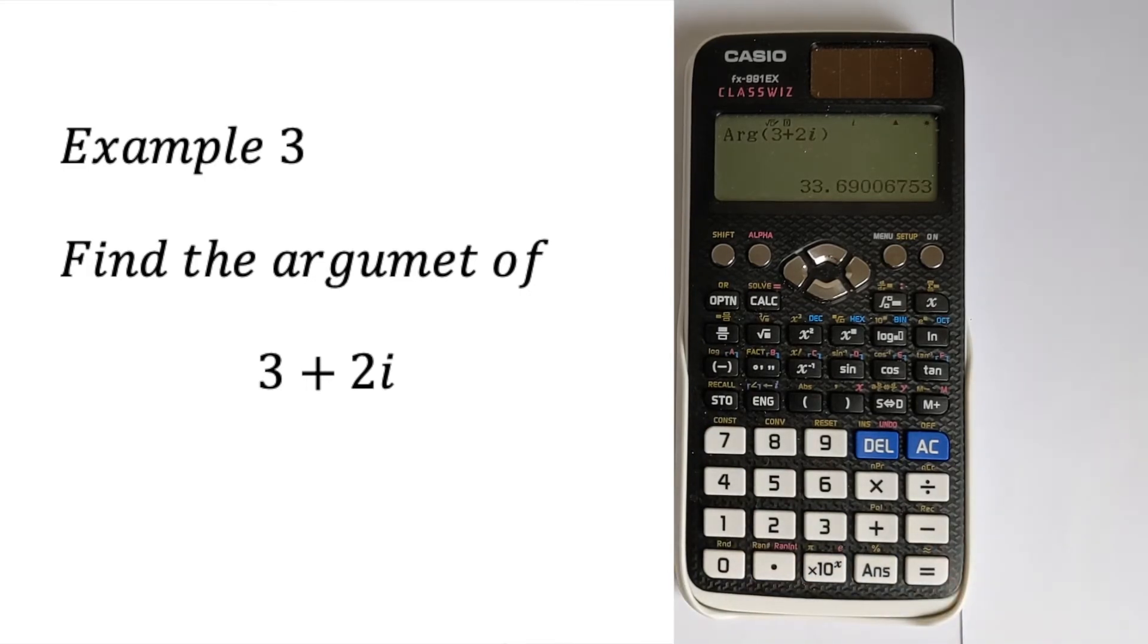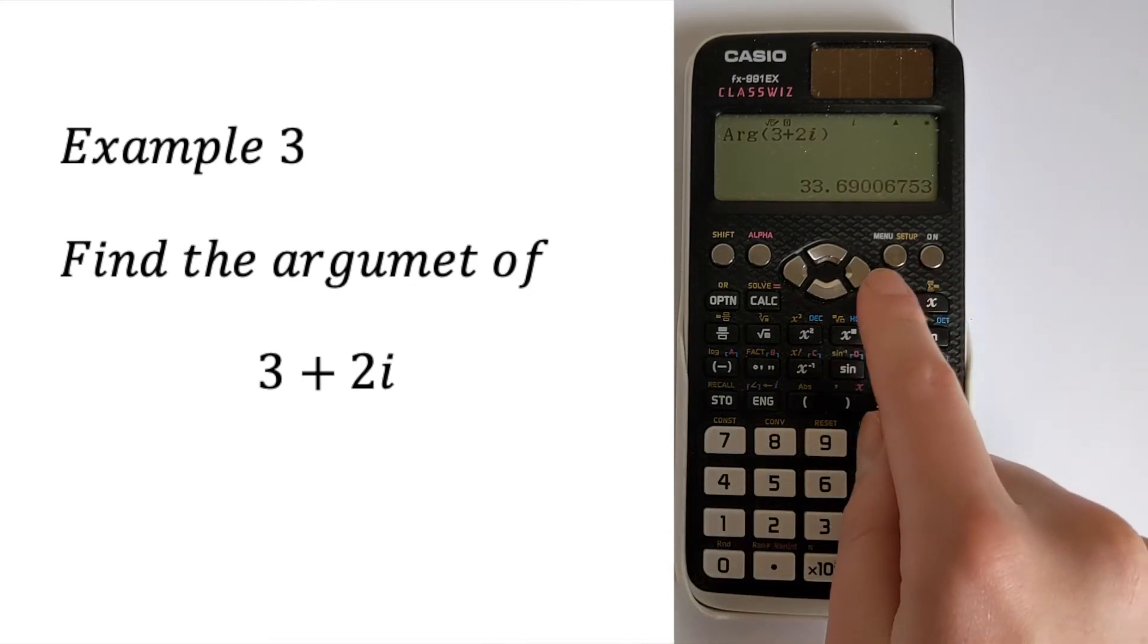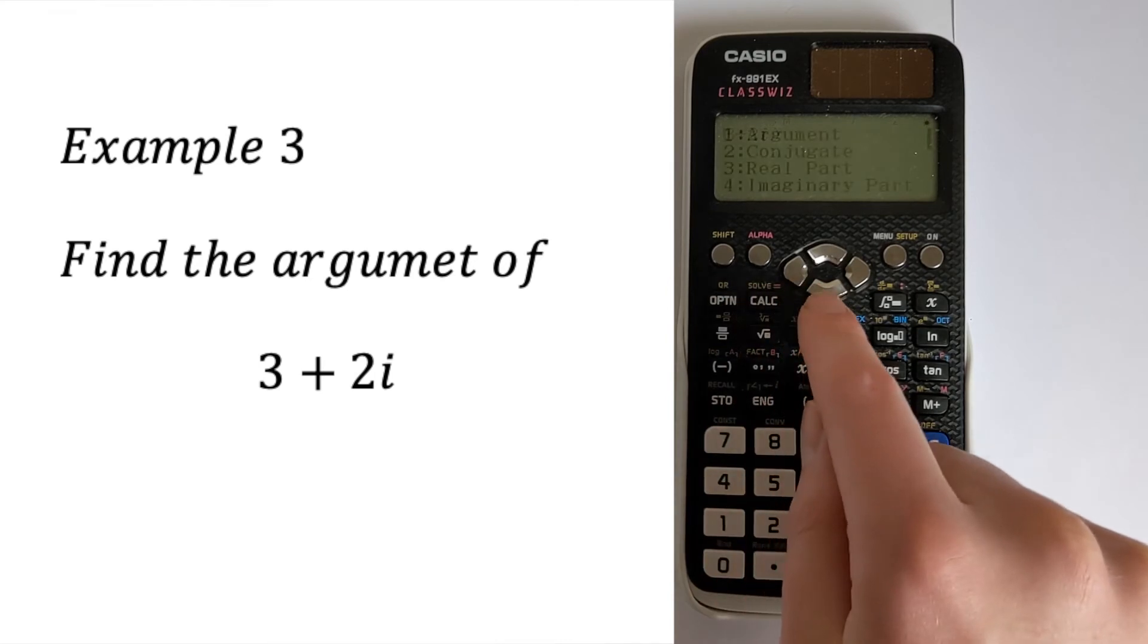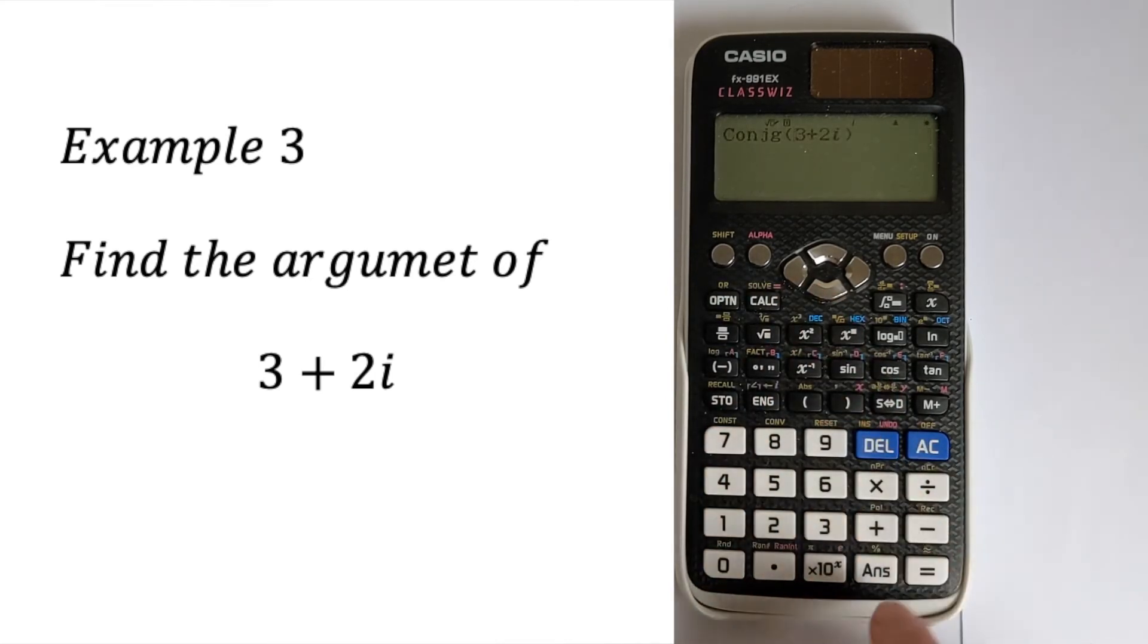That can save some time. It can also find the conjugate. If we delete that, then go back to option and press 2, we can get the complex conjugate very quickly with that function.